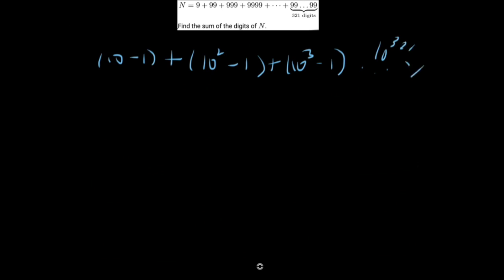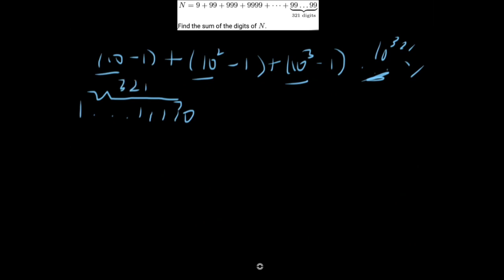The whole point of this is to make everything cleaner. So let's add the powers of 10, ignoring the 1s for now. We start with 10, then adding 10 squared puts a 1 in front, then 10 cubed puts another 1 in front, and so on up to 10 to the 321. So we end up with a number that is just 321 ones.